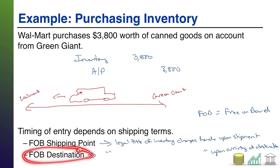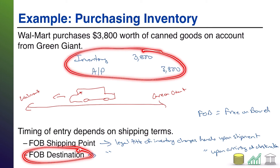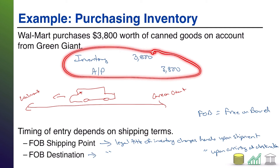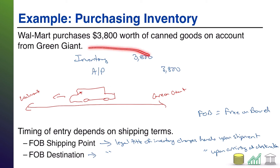On the other hand, if it's FOB destination, Walmart would not record the journal entry until the truck arrives at Walmart. That means the entire time the goods are on the truck, they belong to Green Giant. If something happens to the goods, Green Giant is on the hook. These are contract terms established when the purchase is made, and it matters for accounting because it determines when you record the transfer of ownership and put the inventory on the balance sheet of the company that owns it.